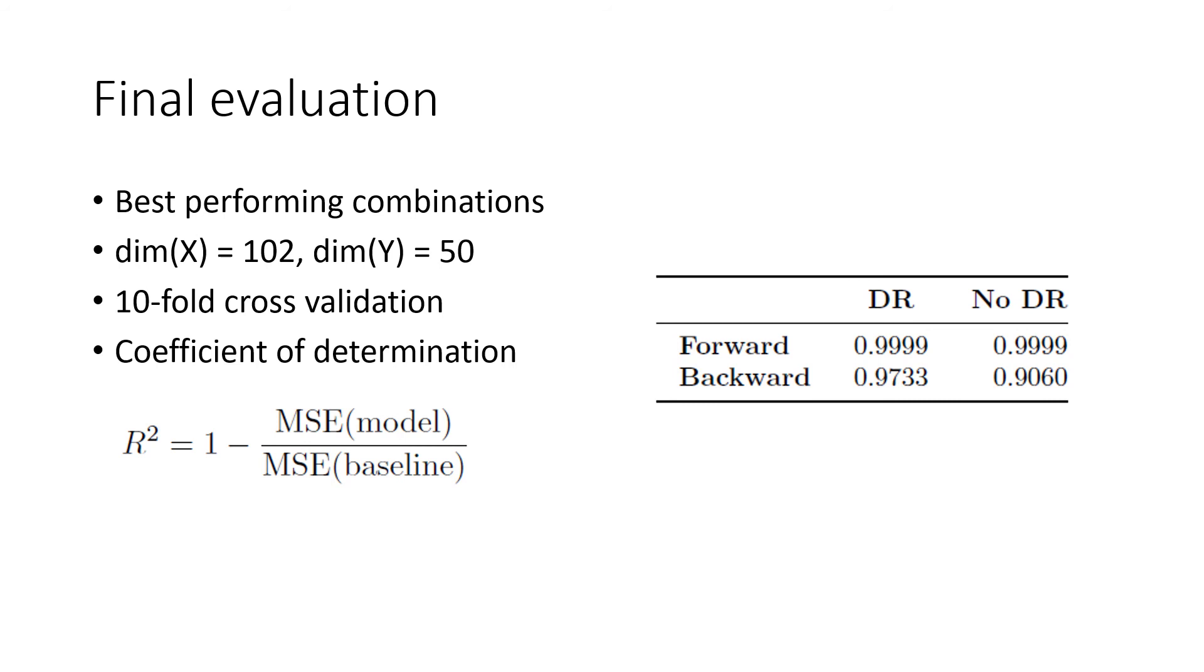Finally, we wanted to take the best performing combinations and confirm our results. So we used 102 dimensions for the atmospheric parameters and 50 dimensions for the spectral data. We employed 10-fold cross-validation and computed the coefficient of determination. We compared the best model using dimensionality reduction as well as a predictive model with no dimensionality reduction. In the case of the forward model, the results are very good and dimensionality reduction is not able to offer any improvements. In the case of the backward model, however, the model using no dimensionality reduction reaches an R-squared of 0.9. Adding PCA improves the performance to 0.97, so a significant improvement.